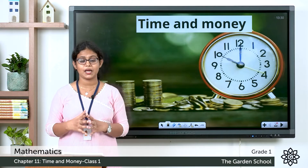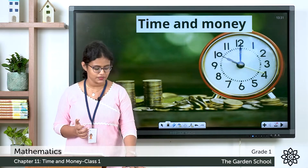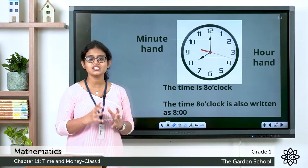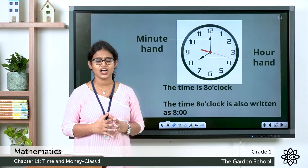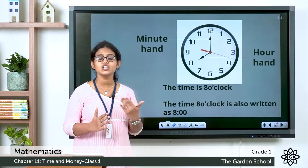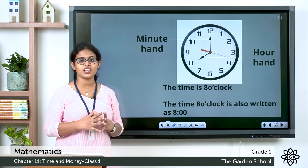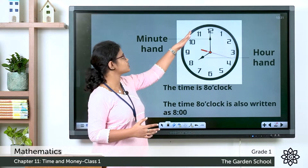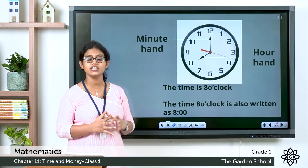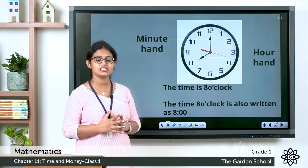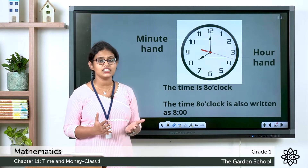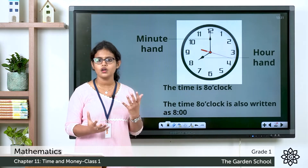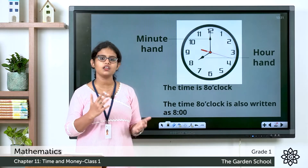Let's discuss about reading the time on a clock. Here you can see the picture of a clock. In this clock there are numbers written — there are 12 numbers, arranged from 1 to 12. In the clock you can see three hands: one is the minute hand, another is the hour hand, and the next one is the second hand. We will learn about the minute hand and the hour hand.